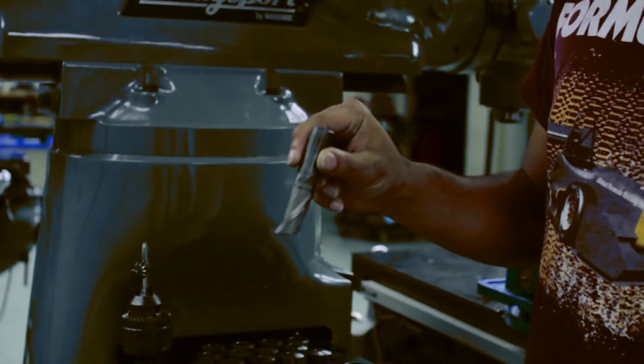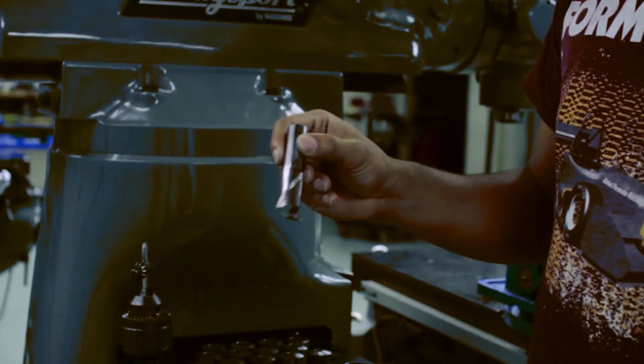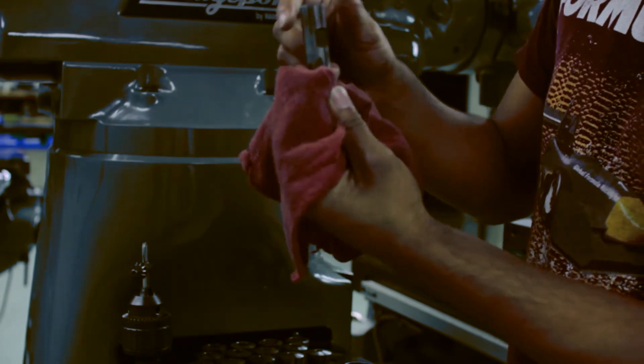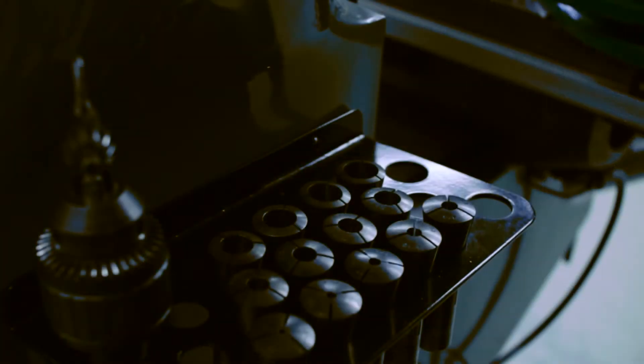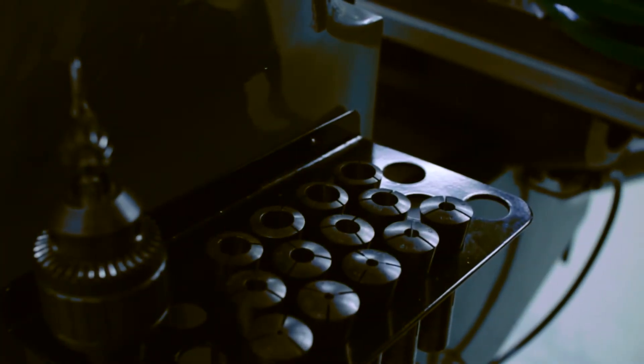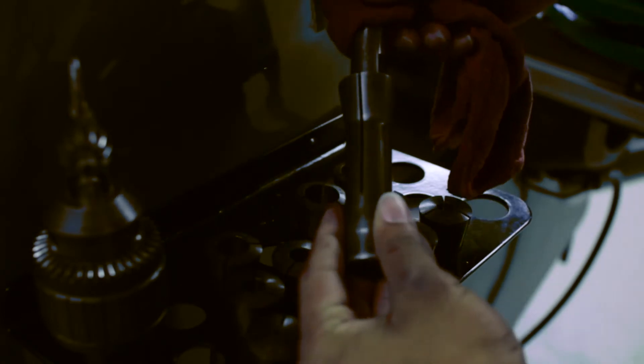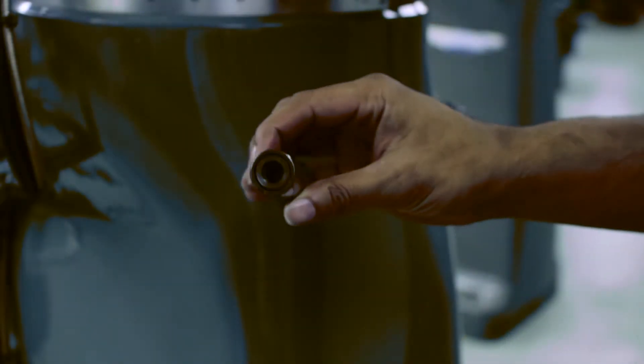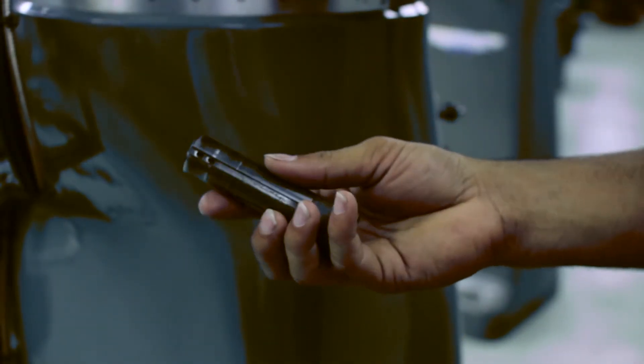When handling an end mill, be sure to hold it by the shank or use a rag and hold it by the flutes. Go to the collet rack on the left side of the machine and select the appropriate collet. The best one always has a line fit. Using an air gun, make sure there are no chips in the collet.